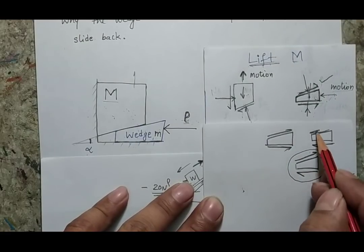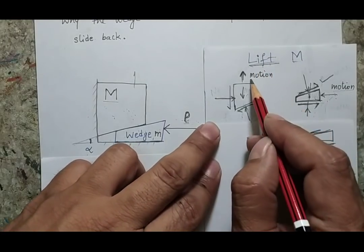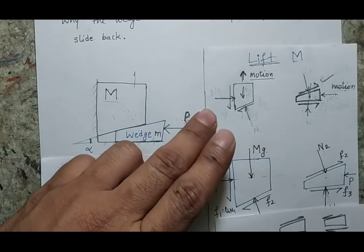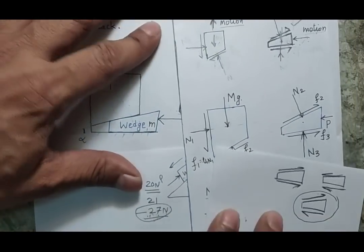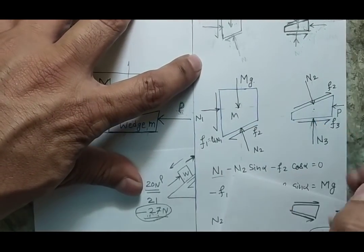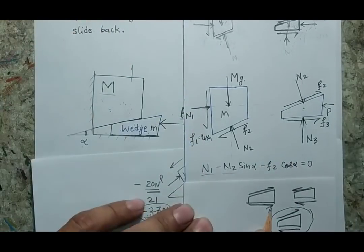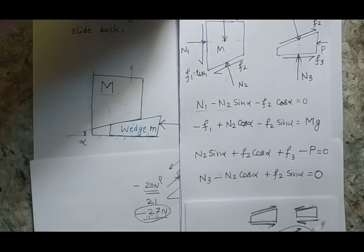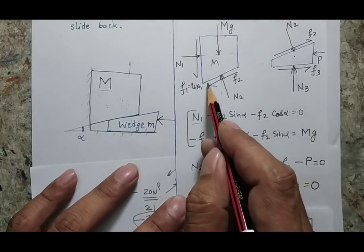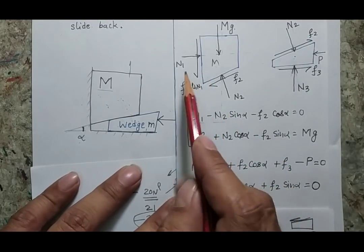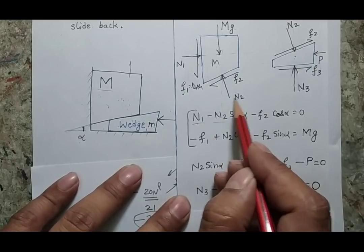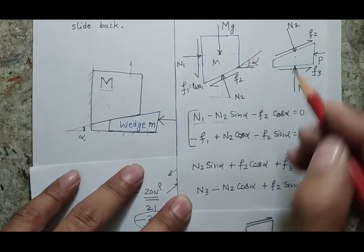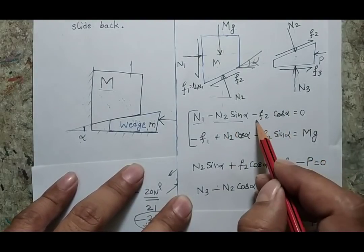Now in the case of lifting, I have understood the direction of motion and based on that I have defined the forces on all the surfaces. Once I define the forces, as I have two different bodies, I can write the equations for force balance. These two equations are written for the larger body. When I balance the horizontal forces, this would be N1 and the horizontal component of N2. Since the wedge angle is defined by alpha, this will be N2 sin(alpha) and the horizontal component of F2 will be F2 cos(alpha).